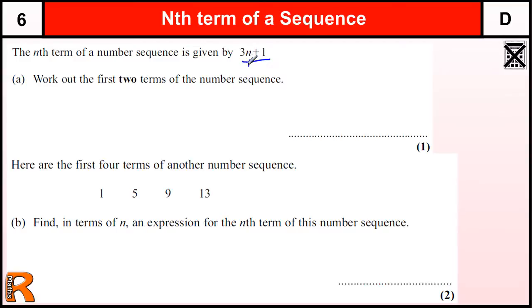Now n is the variable that stands for the position in the term, so when n equals 1, that's the first term. So that's going to be 3 times 1 plus 1, which is 3 plus 1, which is 4.